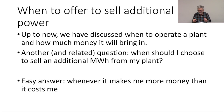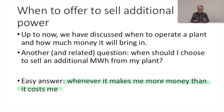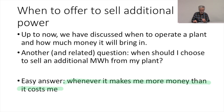The easy answer to the question of when to sell additional power is: we do it whenever it makes more money than it costs. Whenever generating an additional megawatt hour makes the plant more money than it costs, we should do it. Whenever it won't, we won't run it at that additional megawatt hour. It's fairly straightforward as a rule.